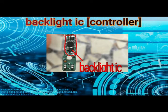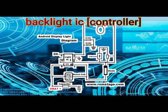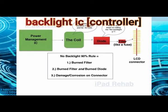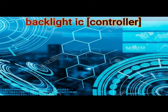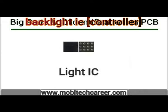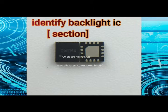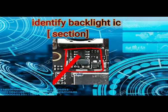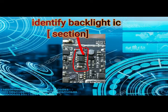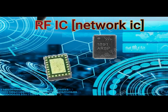In most PCBs, the backlight IC will be in between components — resistors, capacitors, and boost coils — that adjust and send voltage to your display. But in some PCBs you won't see that form; all the components will be integrated into one. In that case it won't be easy to identify easily. Look at those images well and you will be able to identify the backlight IC or backlight section on any mobile PCB.